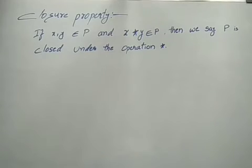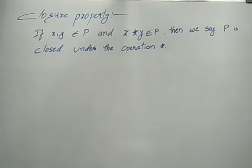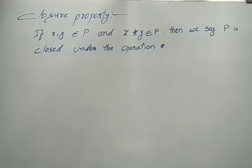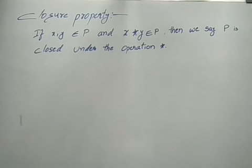The next property is the closure property. If x, y belong to set P, and x operation y also belongs to P, then we say P is closed under that operation. Here the star means an operation — we can use plus, minus, multiply, or division as operations.